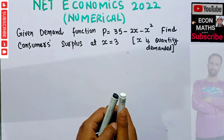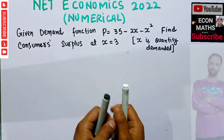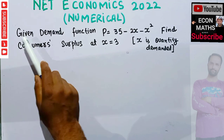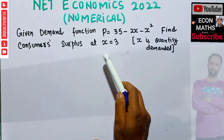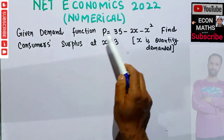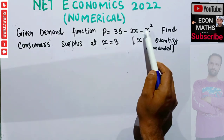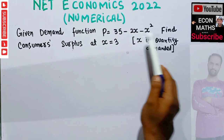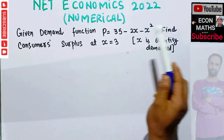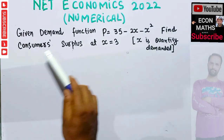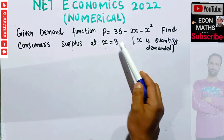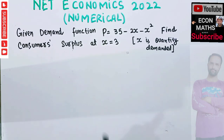Let us solve another question that was asked in the NET Economics paper of 2022. The question is: given the demand function p = 35 minus 2x minus x squared, where x denotes the quantity demanded and p is the price, find the consumer surplus at quantity x = 3.